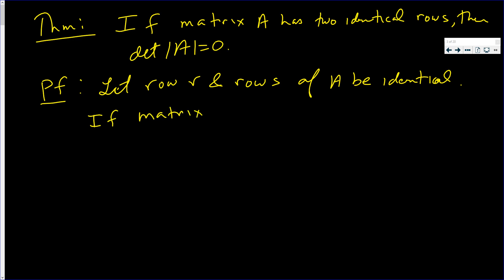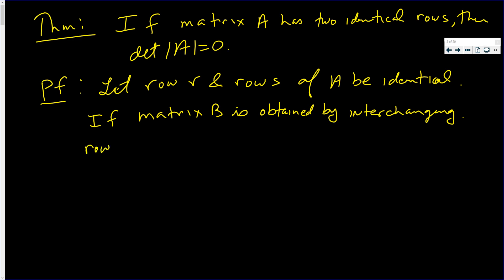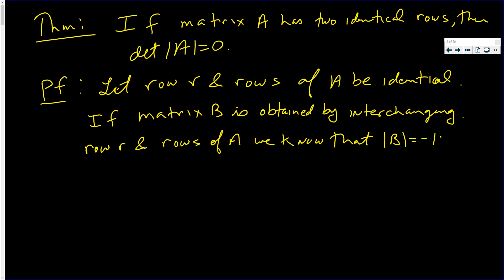If matrix B is obtained by interchanging row R and row S of A, we know that the determinant of B is negative the determinant of A. But A equals B, because interchanging the same two rows gives back the same matrix. Hence,